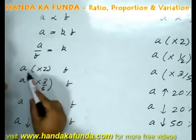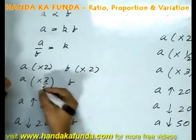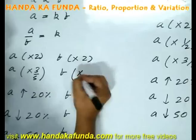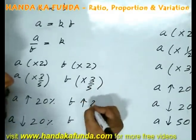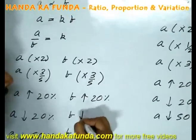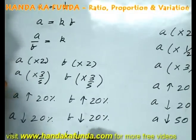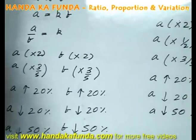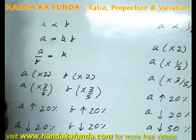For a little more clarity, say A doubles. What will happen to B? B will also double. If A becomes 3 by 5 of the original, B will also become 3 by 5 of the original. If A increases by 20%, B will also increase by 20%. If A falls by 20%, B falls by 20%. If A falls by 50%, B will also fall by 50%. Whatever happens in case of A, the same thing happens with B.